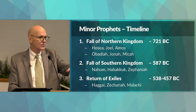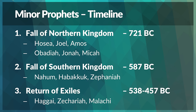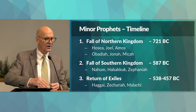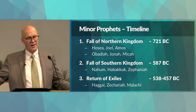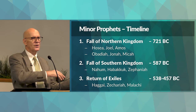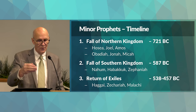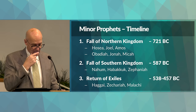The third period spans 538 to 457 BC — the return of the exiles. The southern kingdom went off into Babylon and then, 70 years later, returned. It wasn't all at once — there were three waves of exiles that returned, and we'll study those three waves and the prophets who worked during this time: Haggai, Zechariah, and Malachi.